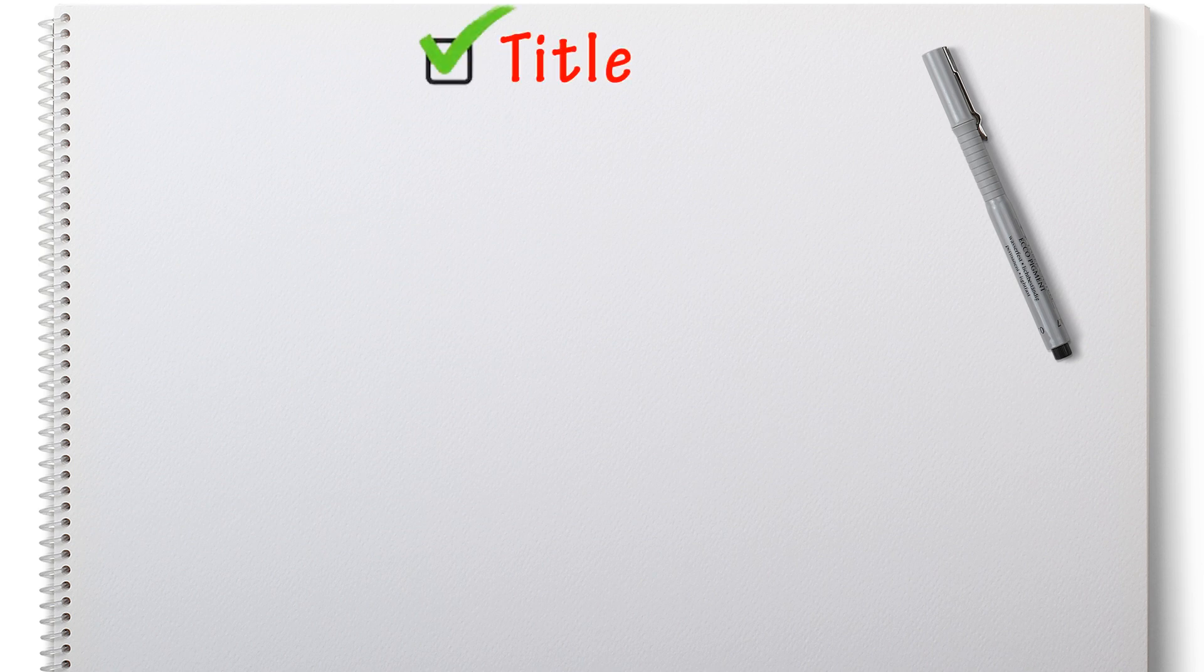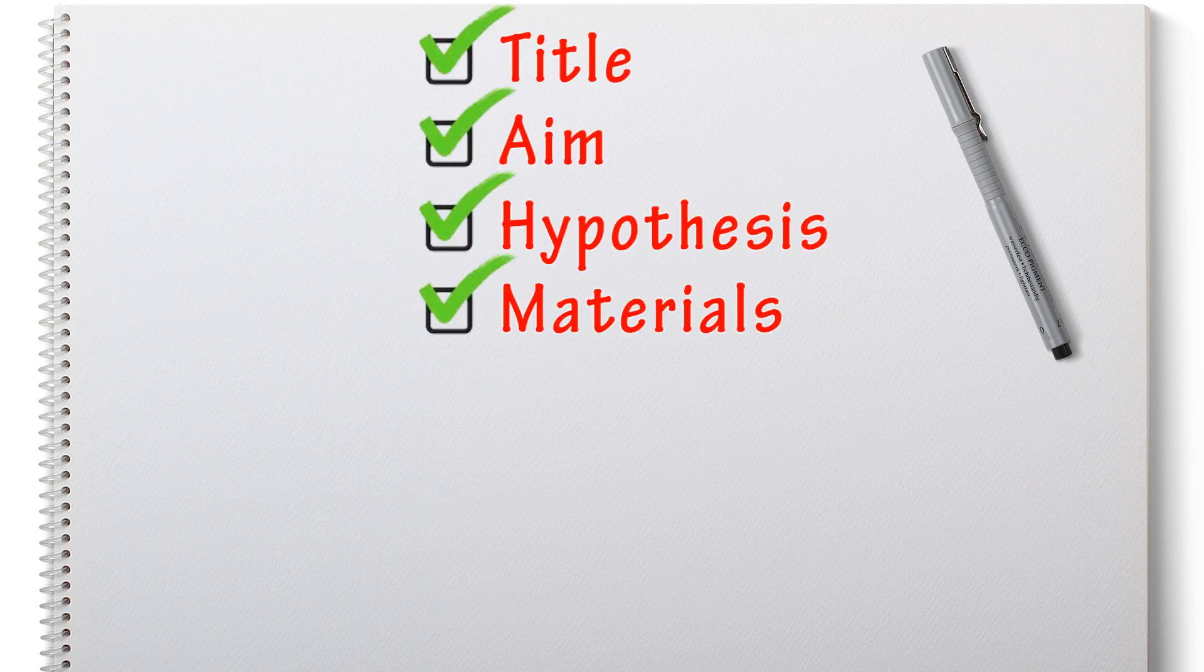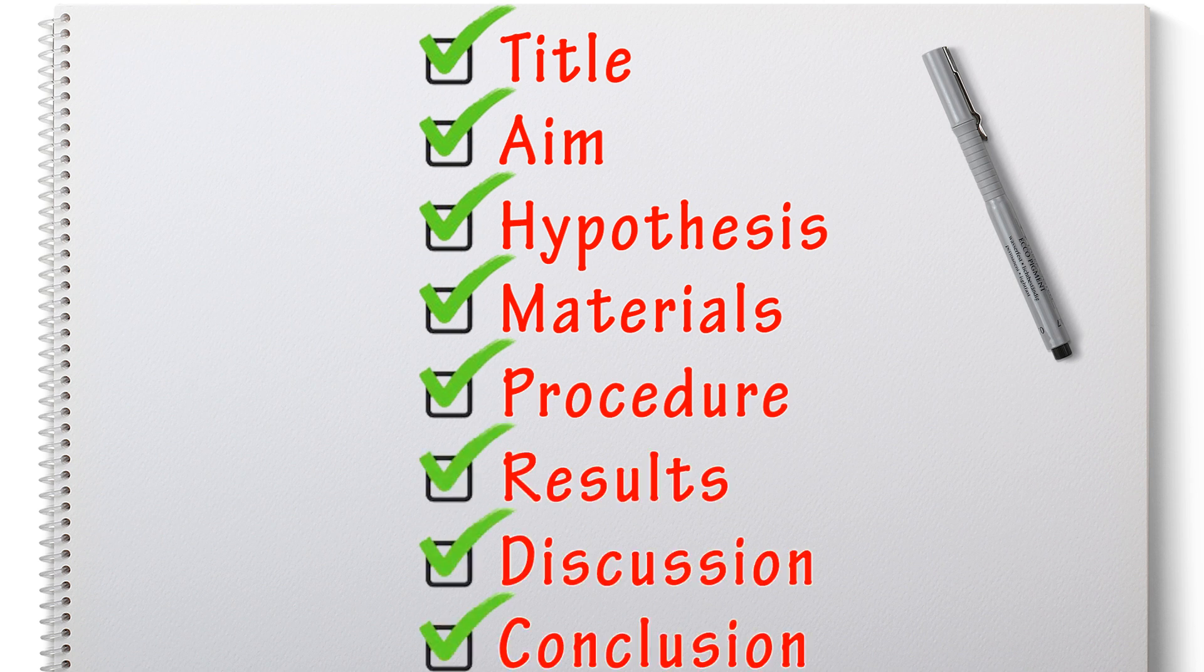So that's it, we've gone through the main sections of a scientific report: the title, aim, hypothesis, materials, procedure, results, discussion and conclusion.